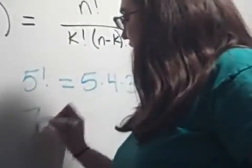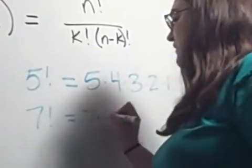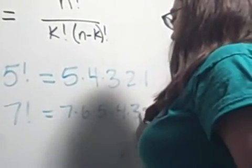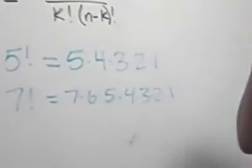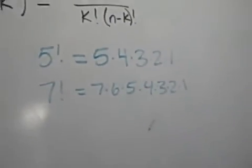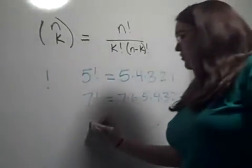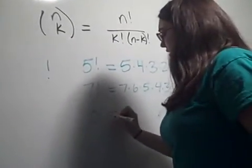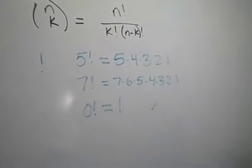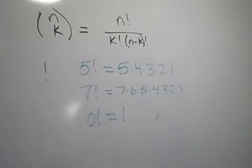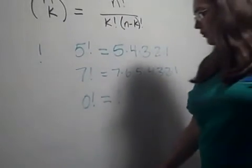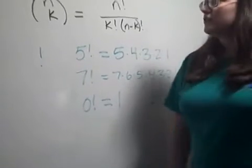So 7 factorial would be 7 times 6 times 5 times 4 times 3 times 2 times 1. Another important one to know is that 0 factorial is just equal to 1, not 0. Now that we know what factorial means, we can continue on.